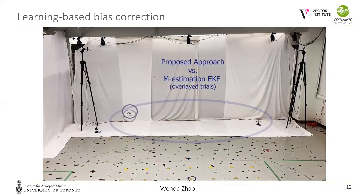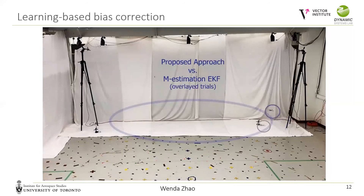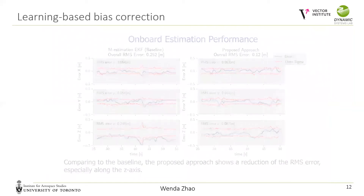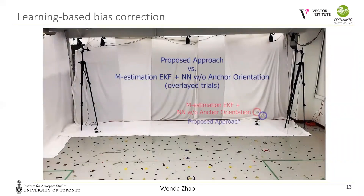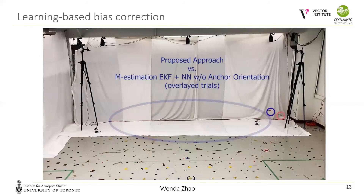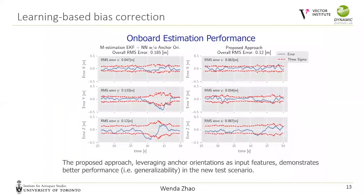The blue circle tracks the quadrotor with our proposed method. We first select the standard Kalman filter as our baseline and compare it against the estimation enhanced by the proposed network. The large circle in the video is the desired path, and our proposed method showed a clear improvement for trajectory tracking, especially in the z-axis. We also compared the proposed approach to the network-based model without anchor orientation. The network without anchor orientation shows incorrect bias prediction near the end of the trajectory. We also note that all three methods show worse performance in the second half of the trajectory, due to the 3D anchor constellation selection and the trajectory approaching the boundary of the constellation.